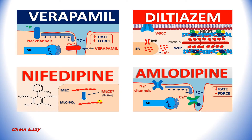The four drugs we are going to discuss in detail are verapamil, diltiazem, nifedipine, and amlodipine. For each drug we will see the structure, its IUPAC name, mechanism of action, structure activity relationship, metabolism, adverse drug reactions, and therapeutic uses.